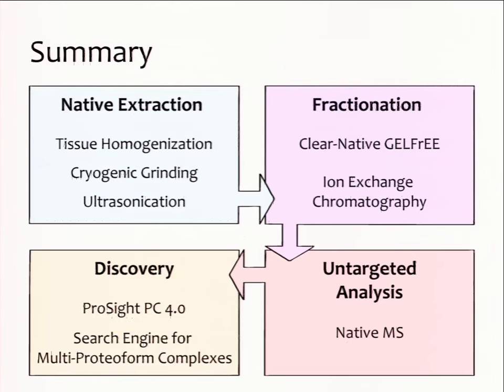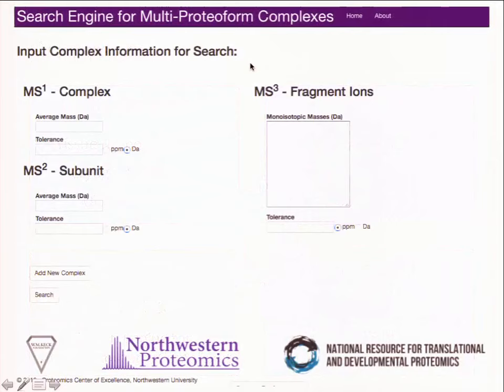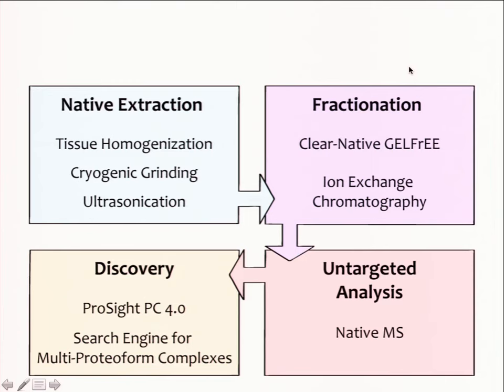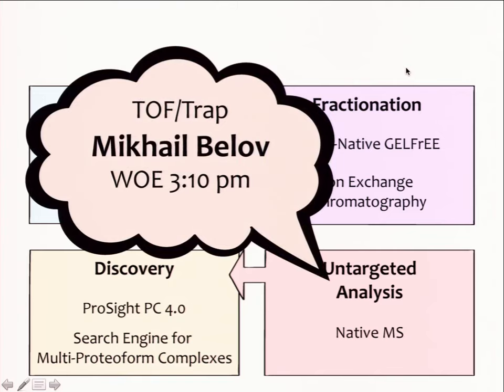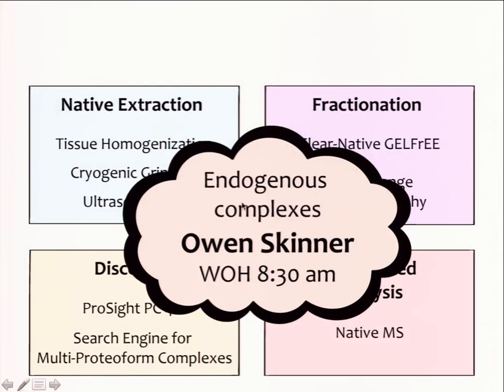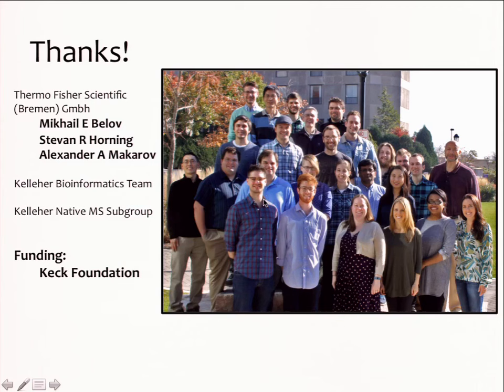In summary, I've walked you through our native proteomics pipeline, introduced our search engine for multiproteiform complexes, and walked through examples including the TNH complex, thymosin beta 10, and the GAPDH complex. If you're interested in new instrumentation for intact proteomics, see Mikhail Belov's talk Wednesday at 3:10. For an improved FDR scoring system for top-down proteomics, see Rich Leduc's talk Thursday. For the application of this pipeline to discovery and characterization of endogenous complexes, see Owen Skinner's talk Wednesday. Thank you, especially to our collaborators at Thermo Fisher Scientific — Drs. Belov, Horning, and Makarov — and our funding from the Keck Foundation.